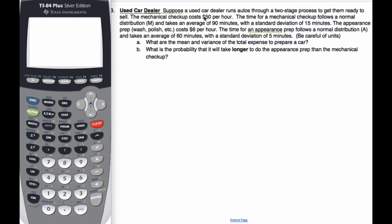The mechanical checkup costs $50 per hour and it follows a normal distribution. It takes an average of 90 minutes, standard deviation of 15 minutes. The appearance prep costs $6 an hour, and the time is also normally distributed. It takes an average of 60 minutes with a standard deviation of 5. Be careful of the units.